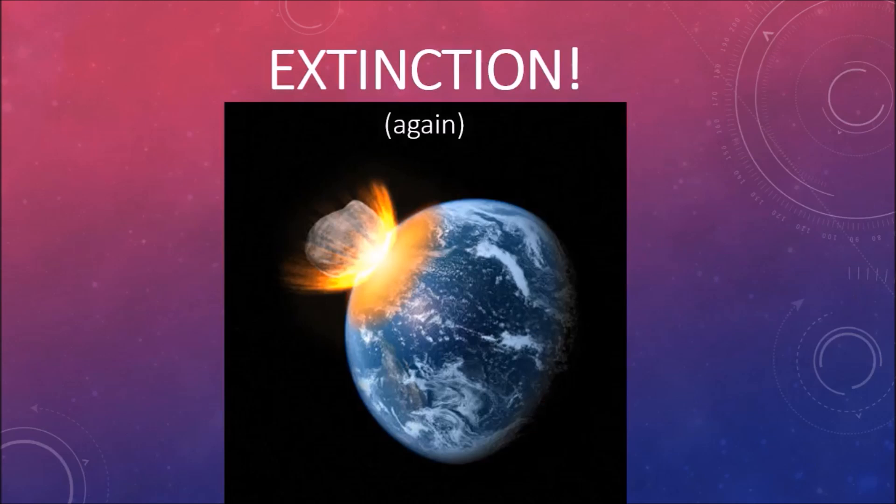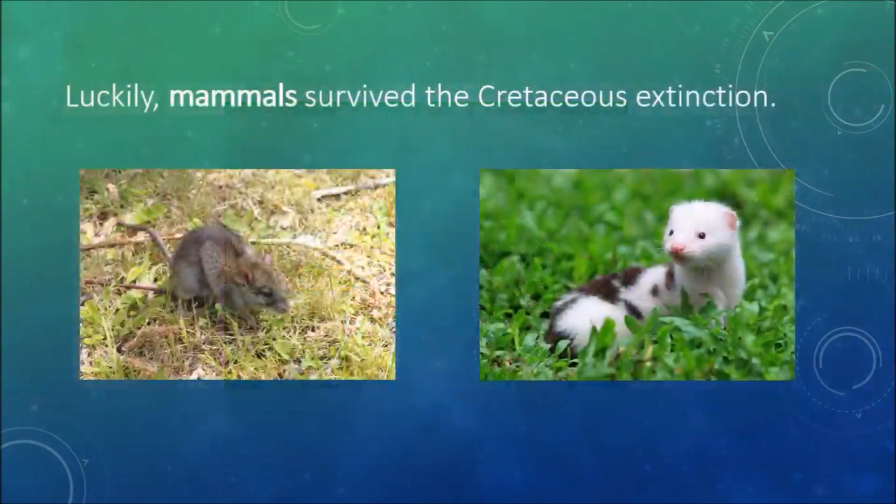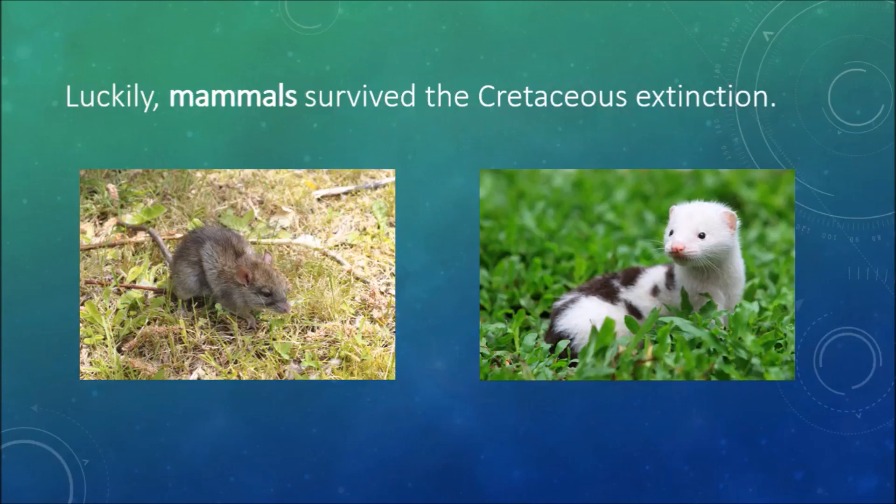At the end of the Cretaceous period came the extinction of the dinosaurs and many other animals. A meteorite about 10 kilometers across smashed into Mexico and all but destroyed the earth's surface. It plunged the world into darkness for at least a few millennia. And yet, even as the mighty dinosaurs died out and the whole globe choked, tiny early mammals survived.